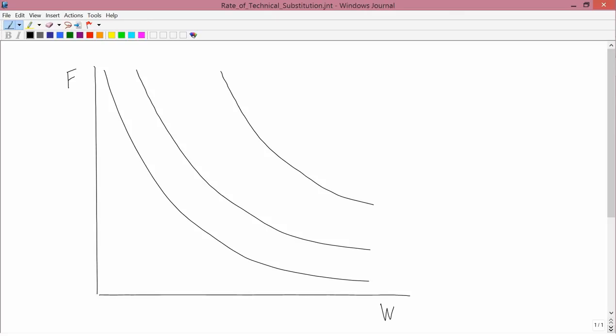It turns out that we're usually going to assume that the shape of the isoquant is not only downward sloping, but also convex.